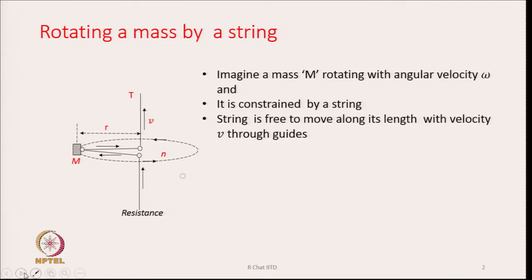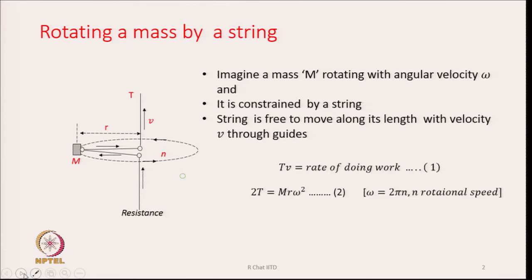This is quite similar to the facts we see in a spinning balloon as well. This is the system we try to understand first. The rate of doing work in this case is going to be tension T into the velocity V with which the string is running — that is, Tv is the rate of doing work.